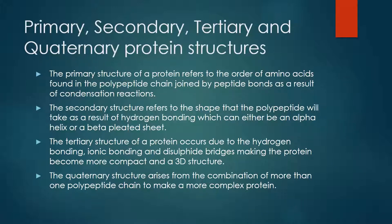Proteins have four different types of structure: primary, secondary, tertiary, and quaternary structures. The primary structure of a protein refers to the order of amino acids found in the polypeptide chain, joined by peptide bonds as a result of condensation reactions.